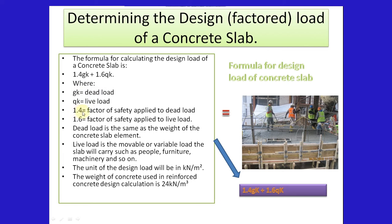1.4 is the factor of safety applied to dead load, while 1.6 is the factor of safety applied to live load. Dead load is the same as the weight of the concrete slab elements. Live load is the movable or variable load the slab will carry, such as people, furniture, machinery, and so on. The unit of the design load will be in kilonewtons per meter squared.